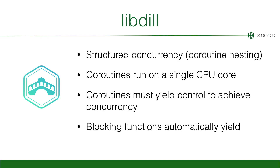Coroutines run on a single CPU core — they must yield, otherwise there's no concurrency, it just blocks. All the blocking functions are implemented in libdil so that they yield, such as network access or file access.